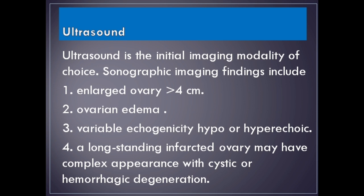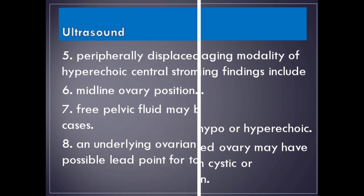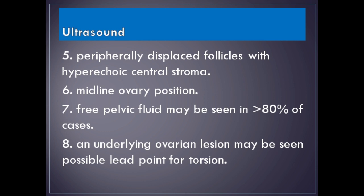Ultrasound is the initial imaging modality of choice. Sonographic findings include: enlarged ovary greater than 4 cm, ovarian edema, variable echogenicity (hypo- or hyperechoic). A long-standing infarcted ovary may have a complex appearance with cystic or hemorrhagic degeneration. Peripherally displaced follicles with hyperechoic central stroma may be seen. Midline ovary position is another sign. Free pelvic fluid may be seen in greater than 80% of cases. An underlying ovarian lesion may serve as a possible lead point for torsion.